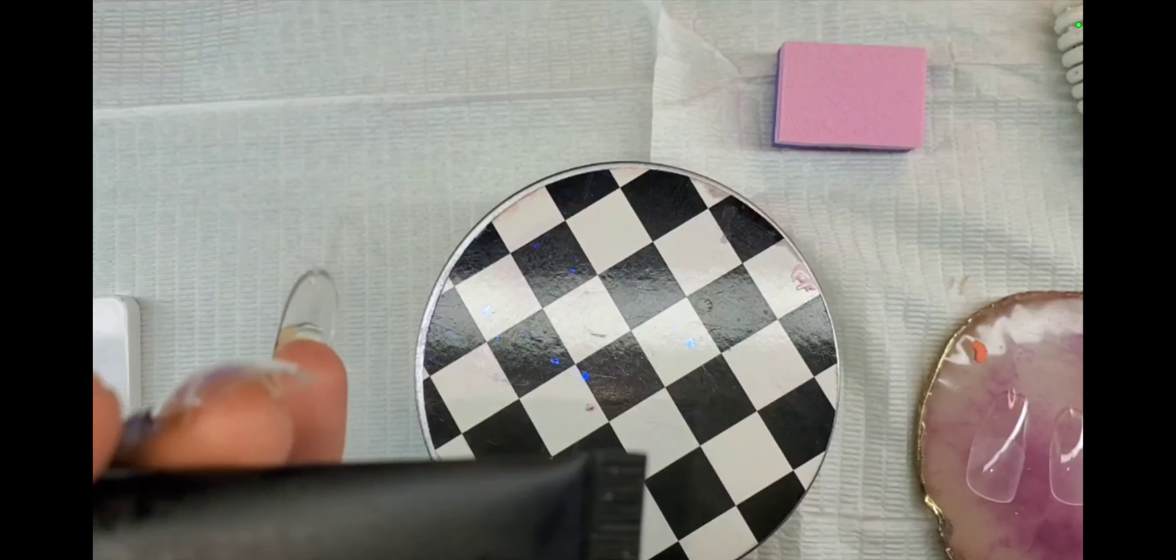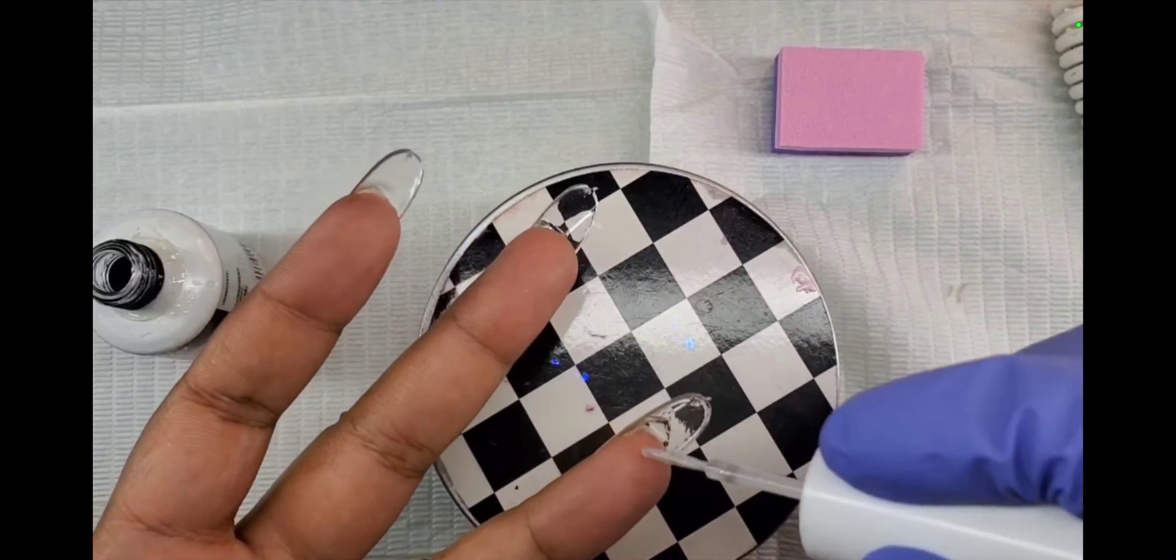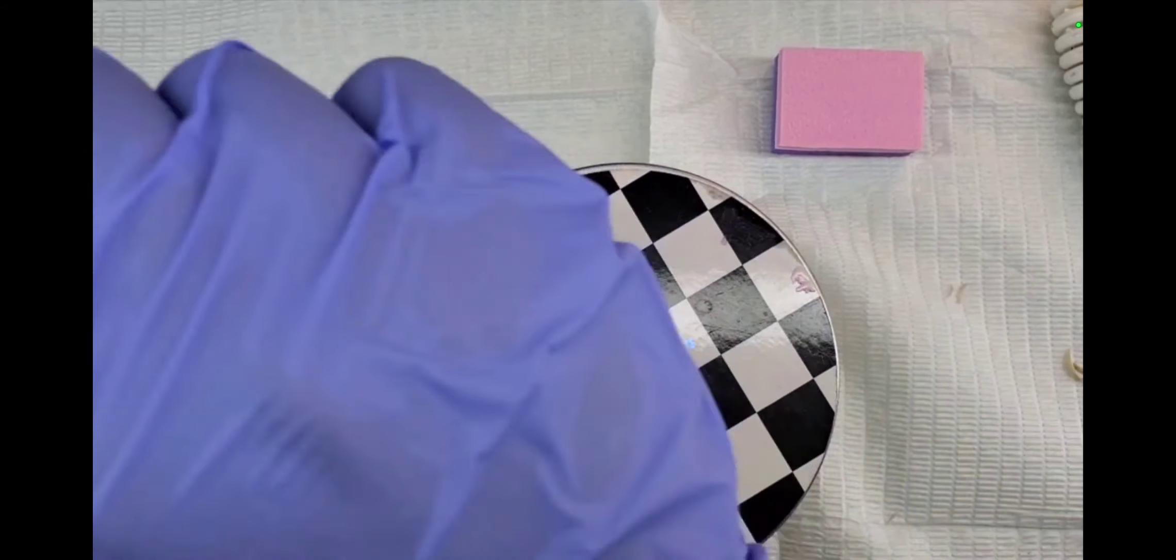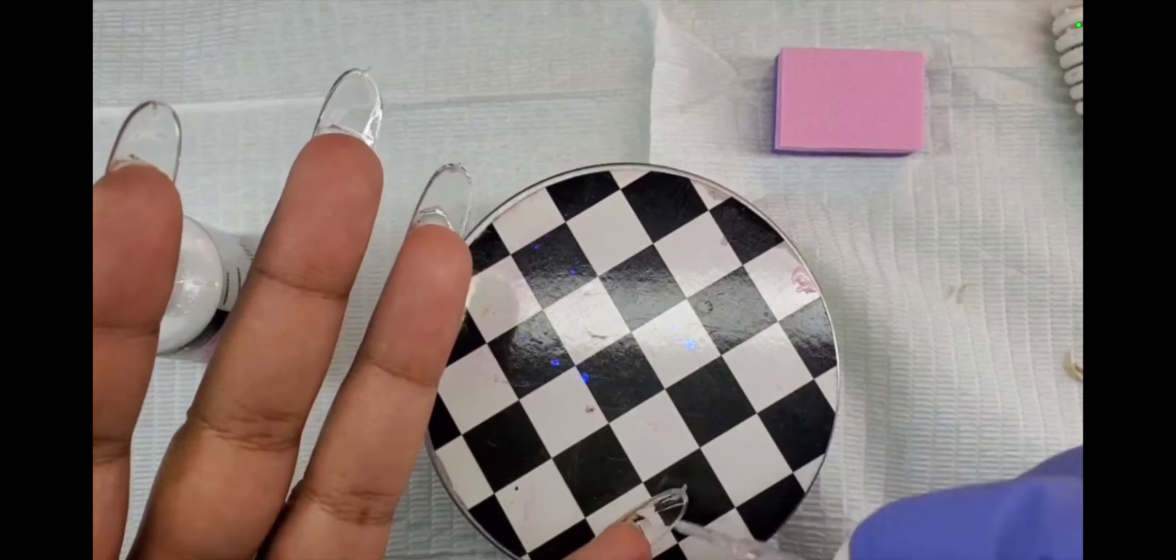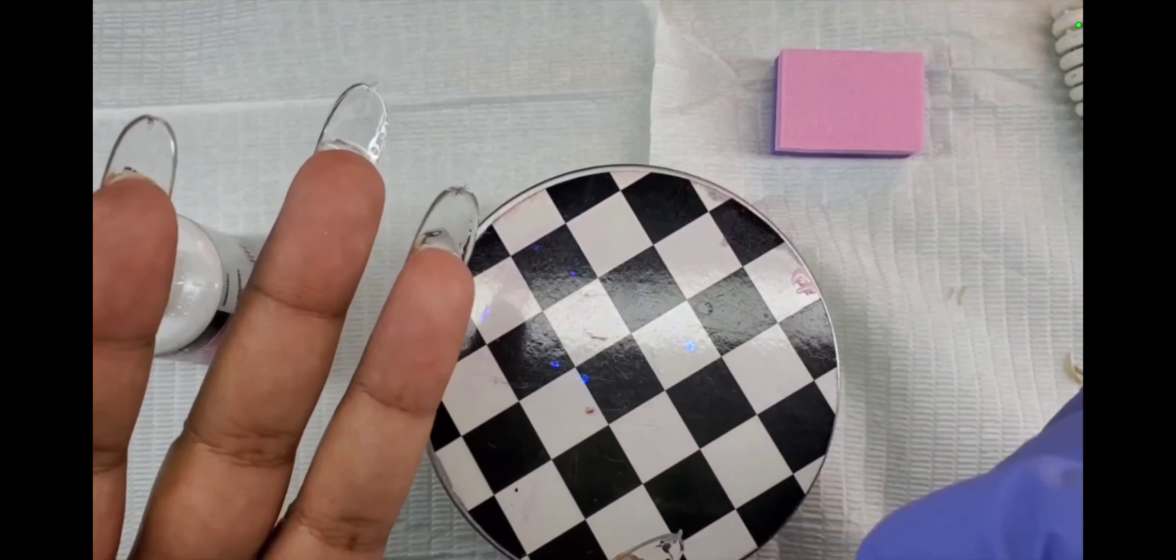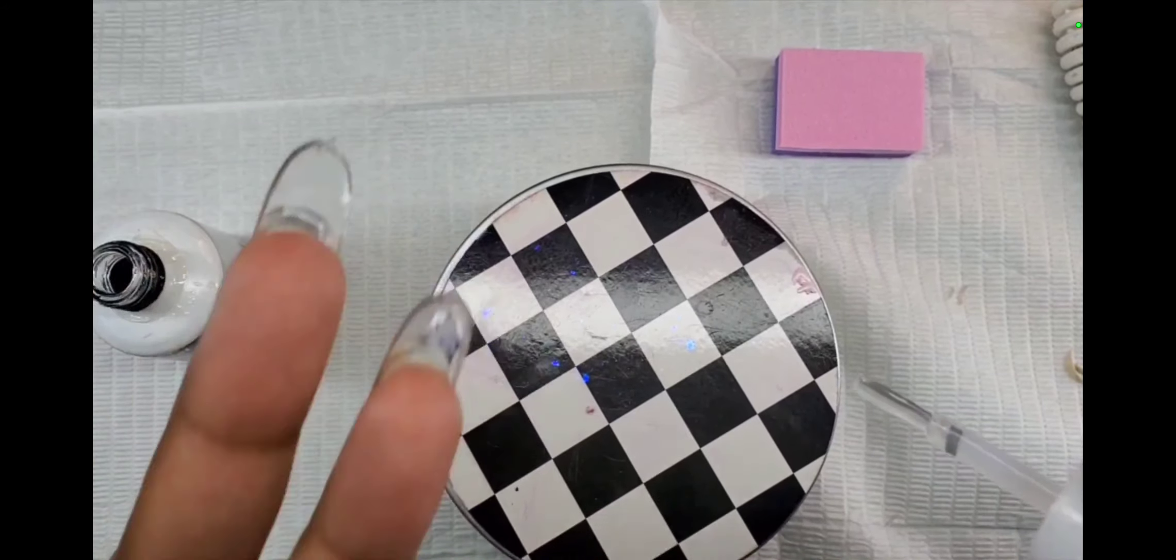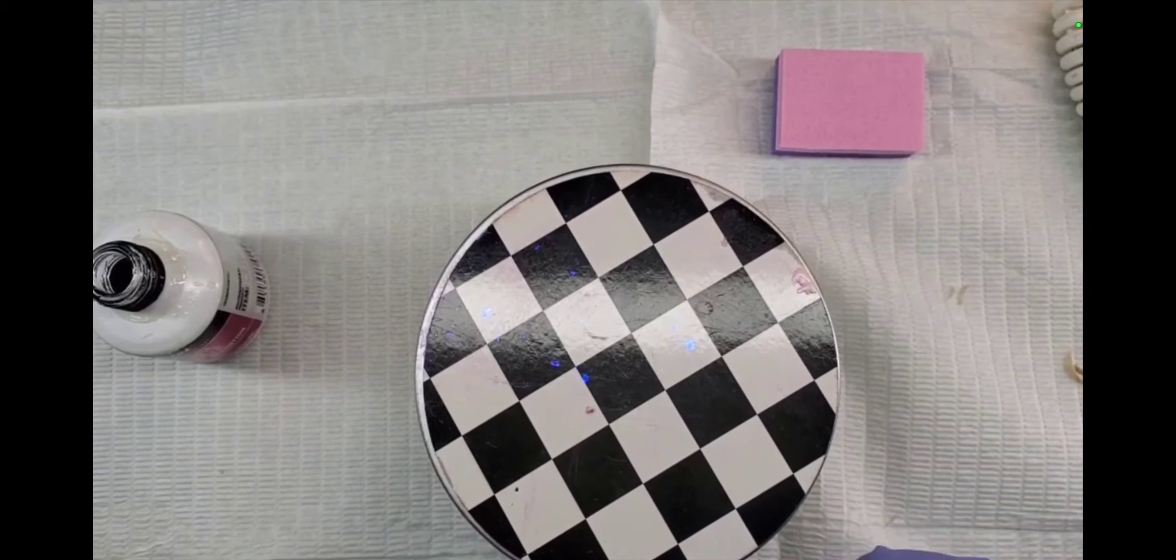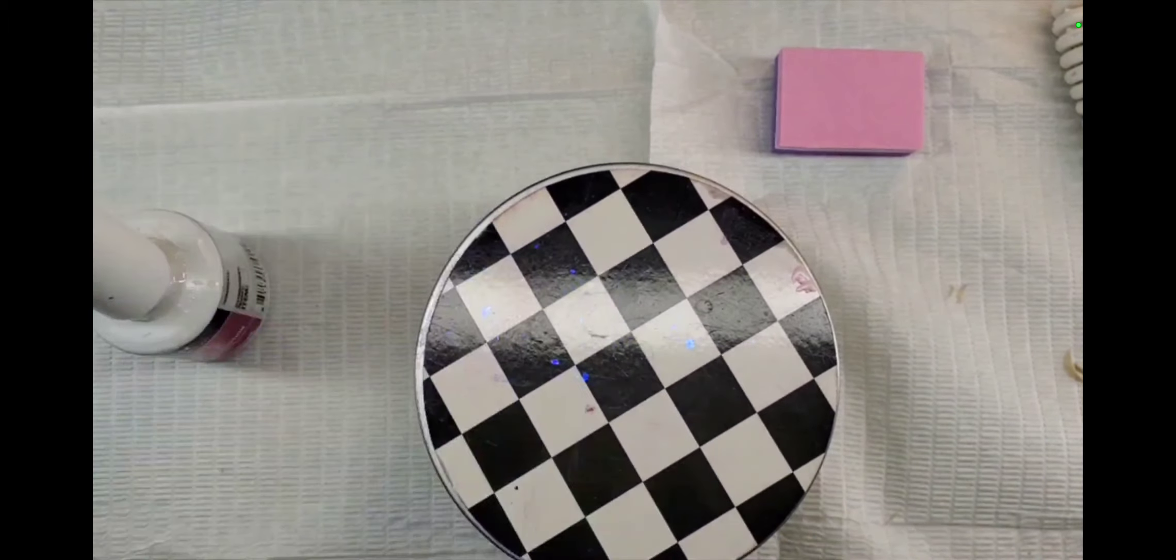Once I got all the tips on I did do a full cure for 60 seconds in a large nail lamp, my whole hand. And then I'm going in with no wipe top coat on the underside so that nothing sticks. Like I have cats and their hair gets all over and everything. And I just don't, I just want it to be nice and clean on the underside. I don't want any debris or anything sticking to it.